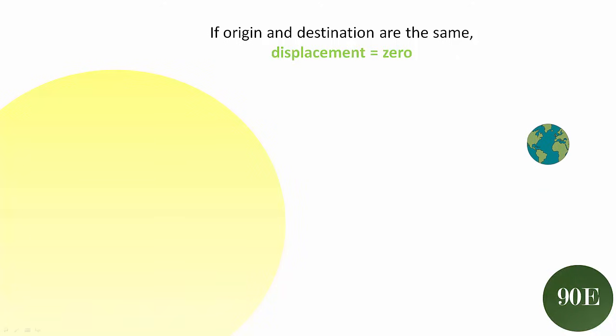The distance that it needs to travel is really great. It's 940 million kilometers, but because it ends up at the exact same spot that it started at, the displacement of the Earth in those 365 and a quarter days is zero.